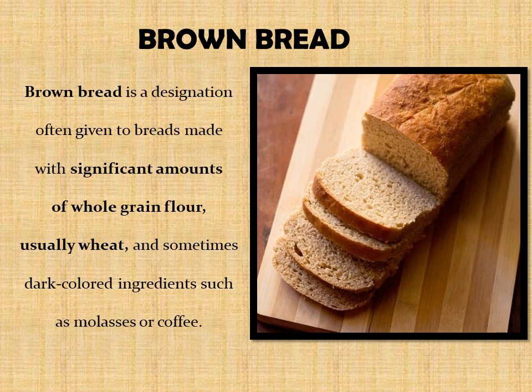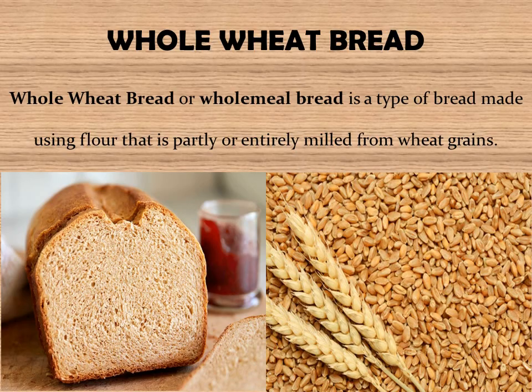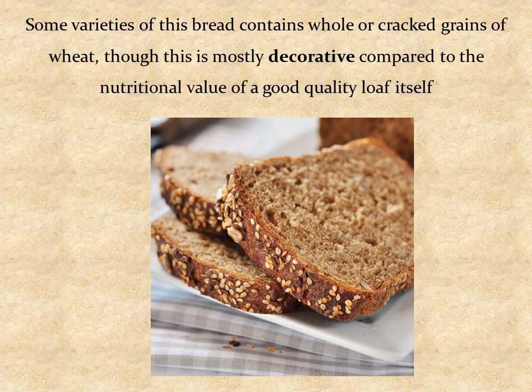On number two, we have brown bread. Brown bread is a designation often given to breads made with significant amounts of whole grain flour, usually wheat, and sometimes dark-colored ingredients such as molasses or coffee. Then we have whole wheat bread, or wholemeal bread, which is a subset of brown bread. It is a type of bread made using flour that is partly or entirely milled from wheat grains. Some varieties contain whole or cracked grains of wheat.